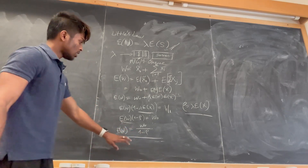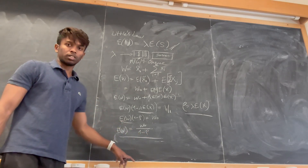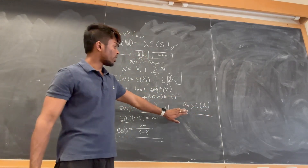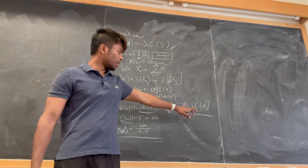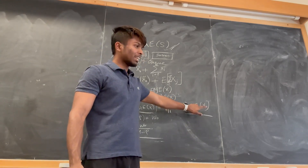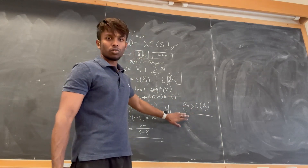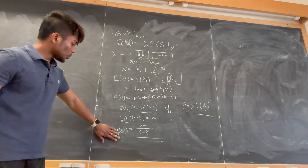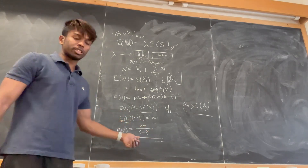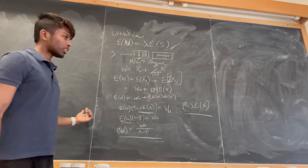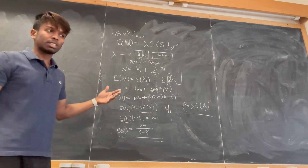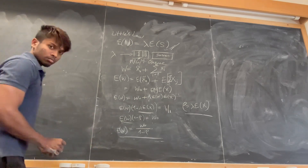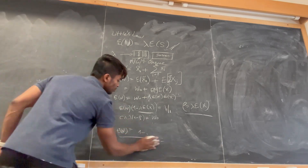Here, ρ is the utilization coefficient of the server, where ρ = lambda × E[X], with lambda being the mean arrival rate and E[X] the expected service time. This relation is central to the M/G/1 result. Now we need to determine W0 — the waiting time experienced by a customer when it arrives but the server is already busy serving other customers.